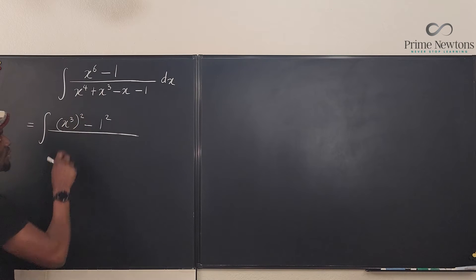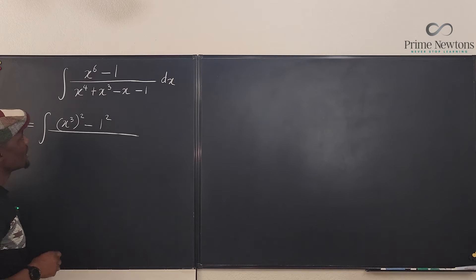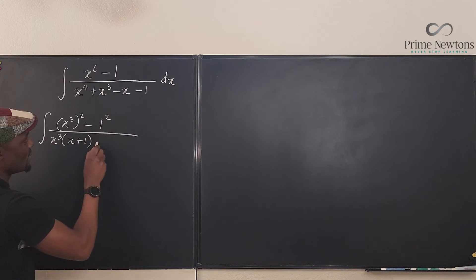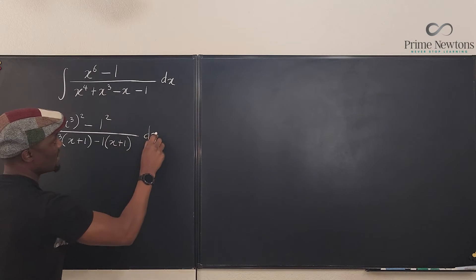At this point I can try to factor the bottom. What if I write this as x cubed? If I factor x cubed from here I'm going to have x plus one, and if I factor minus one from the next two terms I'm going to get x plus one, and I have my dx here.